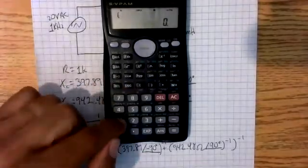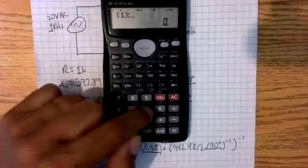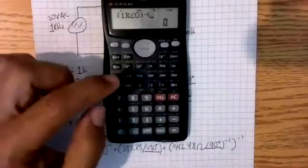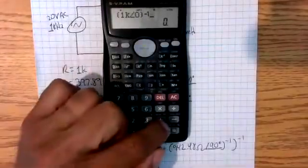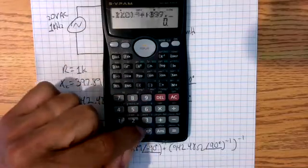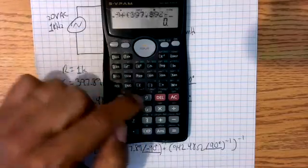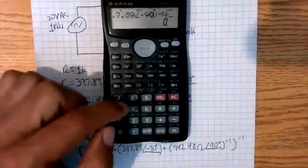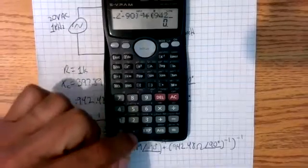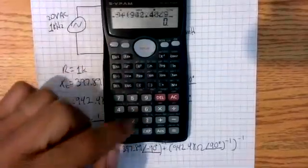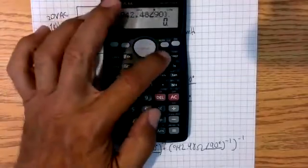So bracket 1k, I'll just put an angle of 0, just to be one of the cool kids. Then bracket 397.89, an angle of negative 90, one over, plus bracket 942.48, and an angle of 90, and then one over.